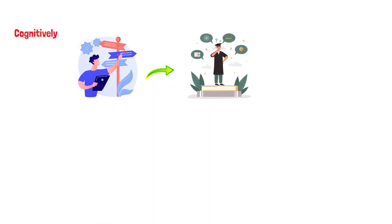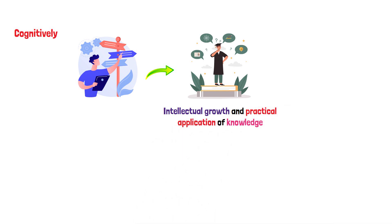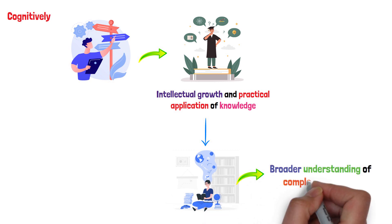Cognitively, this period is marked by changes in thought processes. College and career choices stimulate intellectual growth and practical application of knowledge. The cognitive developments of early adulthood extend beyond academic learning, encompassing a broader understanding of complex life issues.